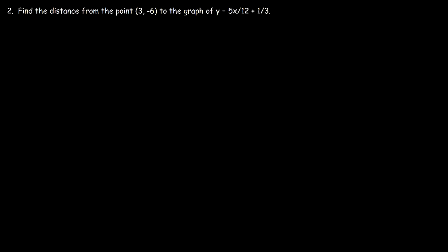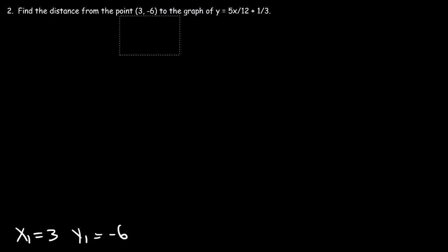Number 2. Find the distance from the point 3, negative 6 to the graph y equals 5x over 12 plus 1 over 3. We can see that this is x1 and this is y1. So x1 is equal to 3, and y1 is negative 6. Now what we need to do is write the linear equation in standard form — we need it in ax plus by plus c equals 0 format.